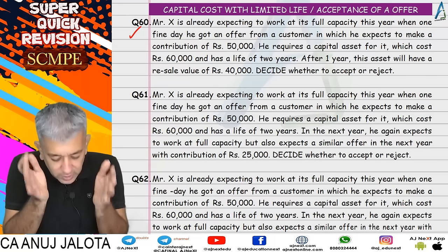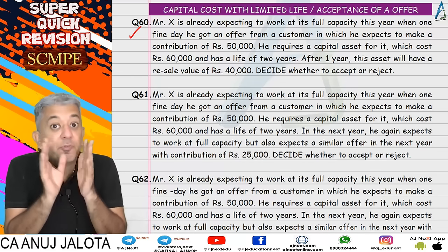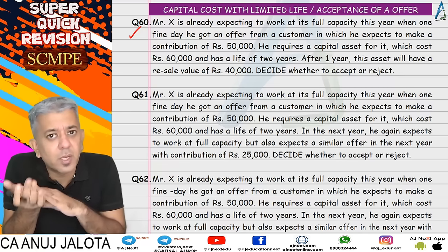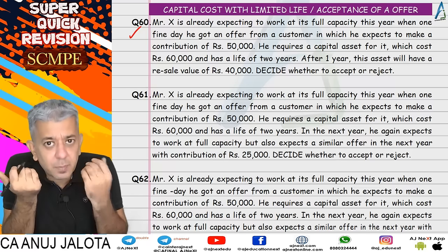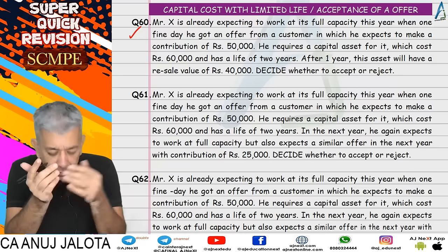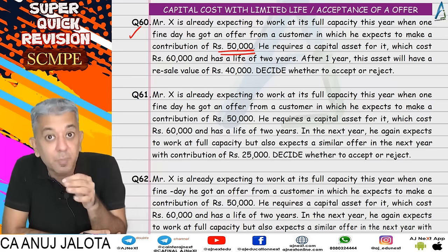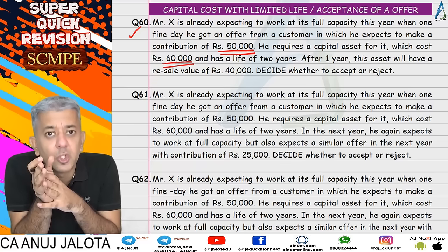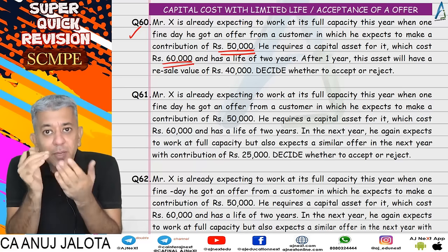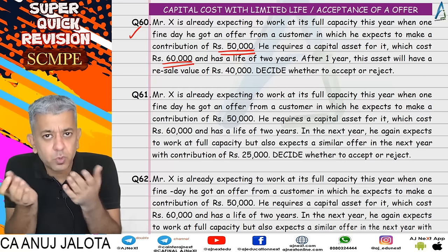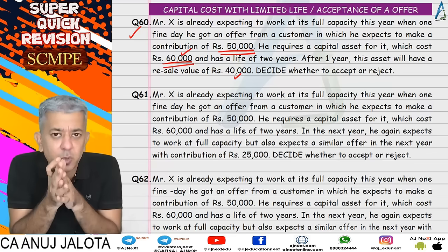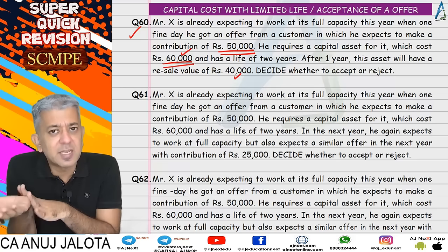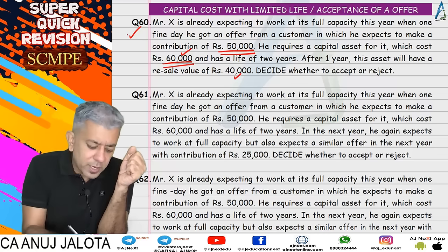Ab questions 60 se 63 ki baat karte hain. In sabhi questions mein ek common cheez thi — we were working at full capacity, matlab apne paas koi spare capacity nahi thi. Ek din apne paas ek offer aata hai, toh aap soch rahe ho — accept karun ya na karun? Apne paas spare capacity nahi hai toh aapke paas ek hi option tha — apna capacity badhao. Uske liye ek capital cost ki zaroorat hai, ek plant and machinery ki zaroorat hai. Question 60 mein aap plant and machinery khareedoge phir ek saal baad bech doge — 60,000 mein khareed hoge, ek saal mein 40,000 pe becho ge, toh net cost 20,000 rupees. 50,000 rupees ka contribution less 20,000 ka capital cost — end mein 30,000 rupees of profit.